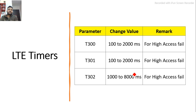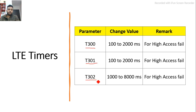Additional timers that can help improve accessibility KPI are T300, T301, and T302. For detailed understanding of these timers — when they start, when they end, and how they improve network performance — please watch my separate video on LTE timers. The link will be provided in the video description.